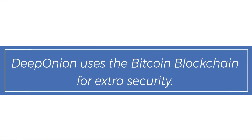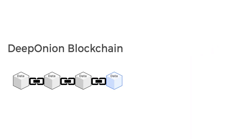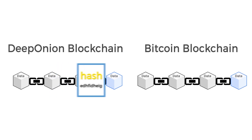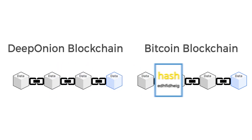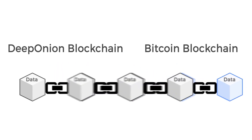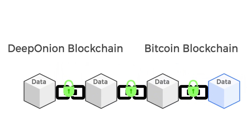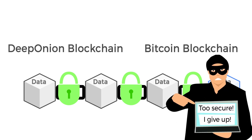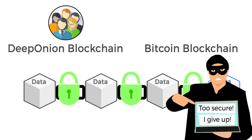DeepOnion uses the Bitcoin blockchain for extra security. DeepOnion generates a hash of its entire blockchain and then stores it on the Bitcoin blockchain, which adds an extra layer of security to protect against attacks and verifies that all users are on the correct chain.